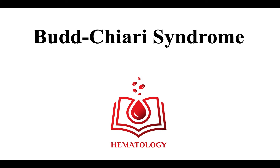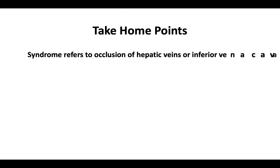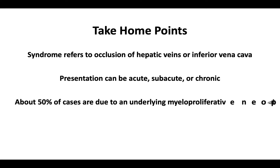Welcome to the Budd-Chiari syndrome. In this video, we will review the unusual manifestation of hepatic vein thrombosis. In the next few minutes, we will discuss the following take-home points. The syndrome refers to occlusion of hepatic veins or the hepatic portion of the inferior vena cava. Presentation can be acute, subacute, or chronic. About 50% of cases are due to an underlying myeloproliferative neoplasm.